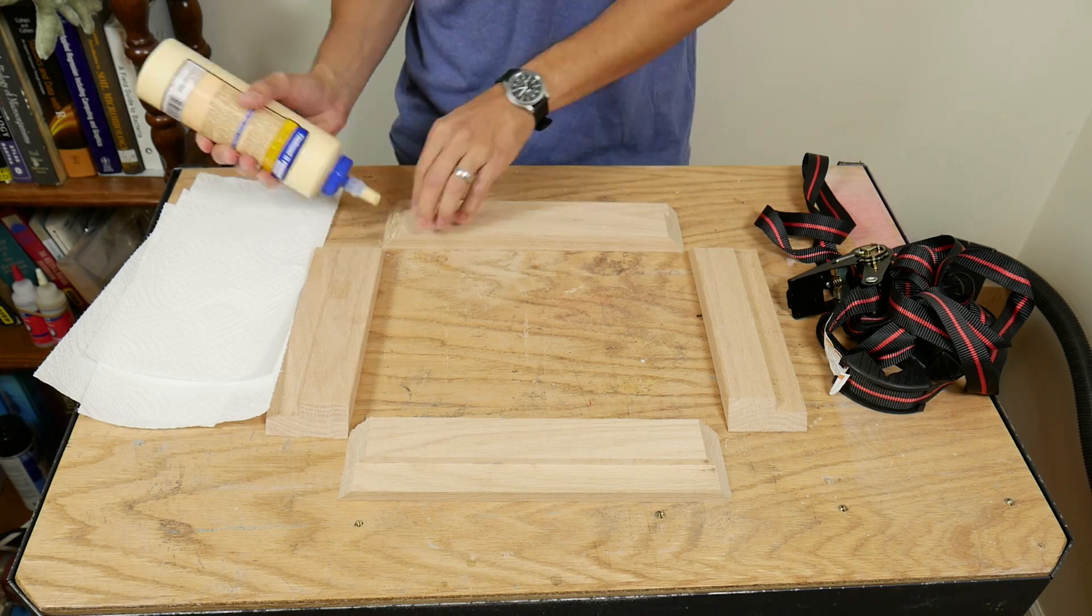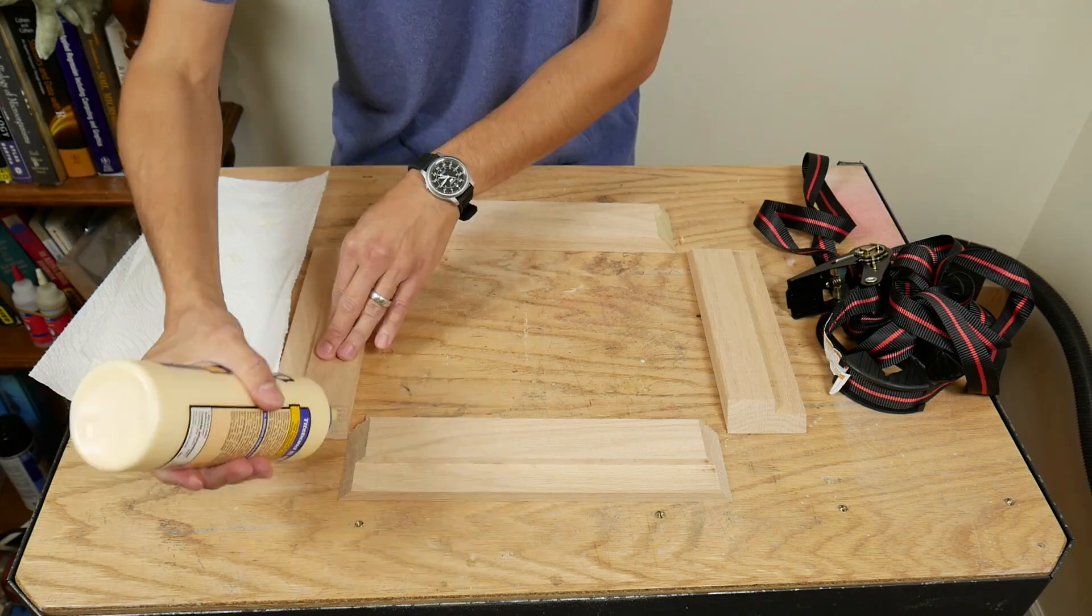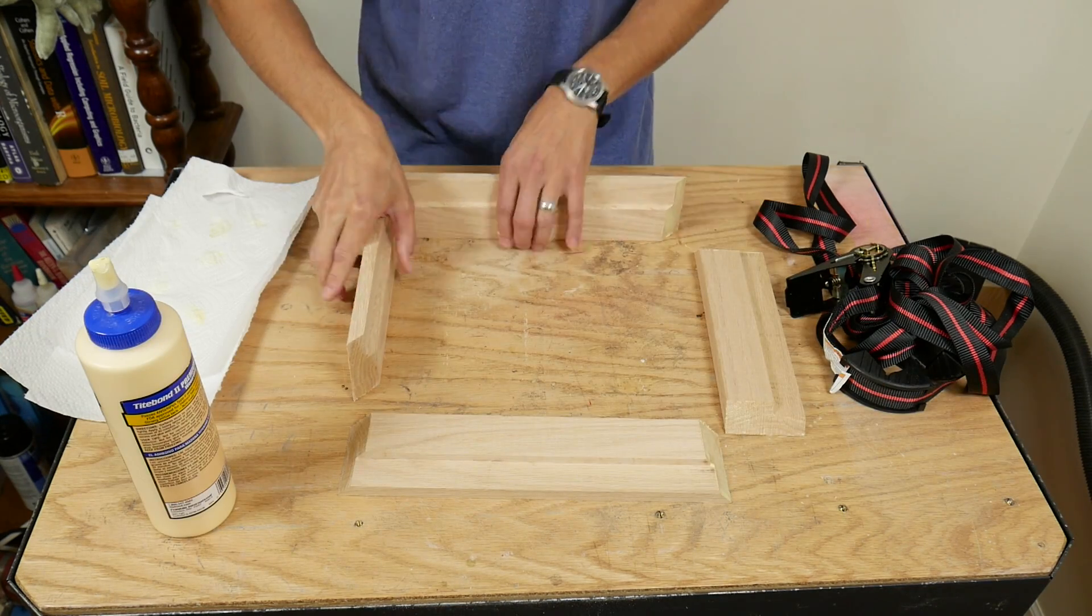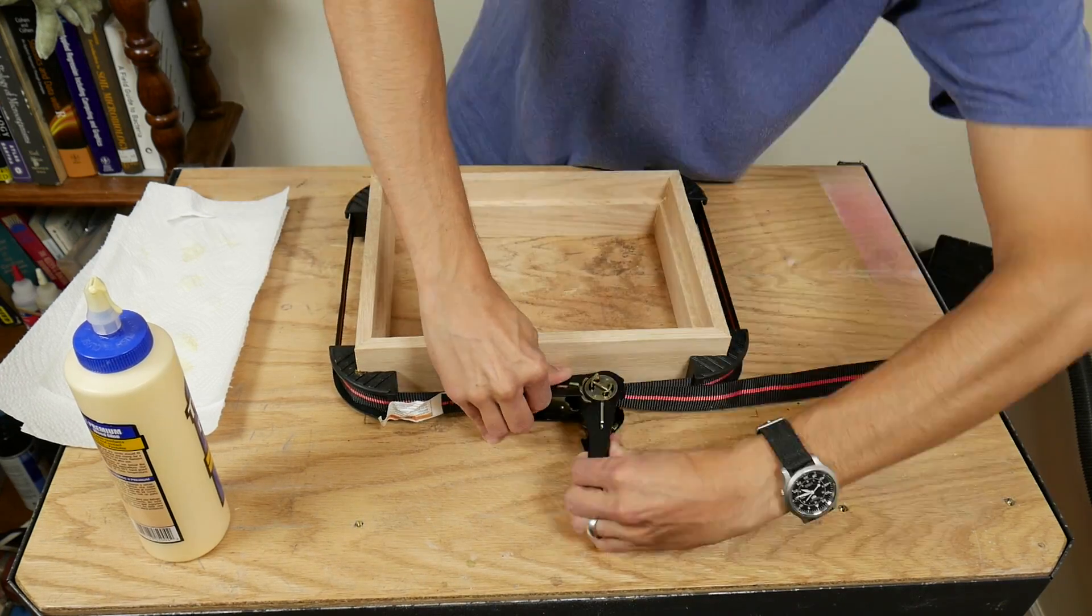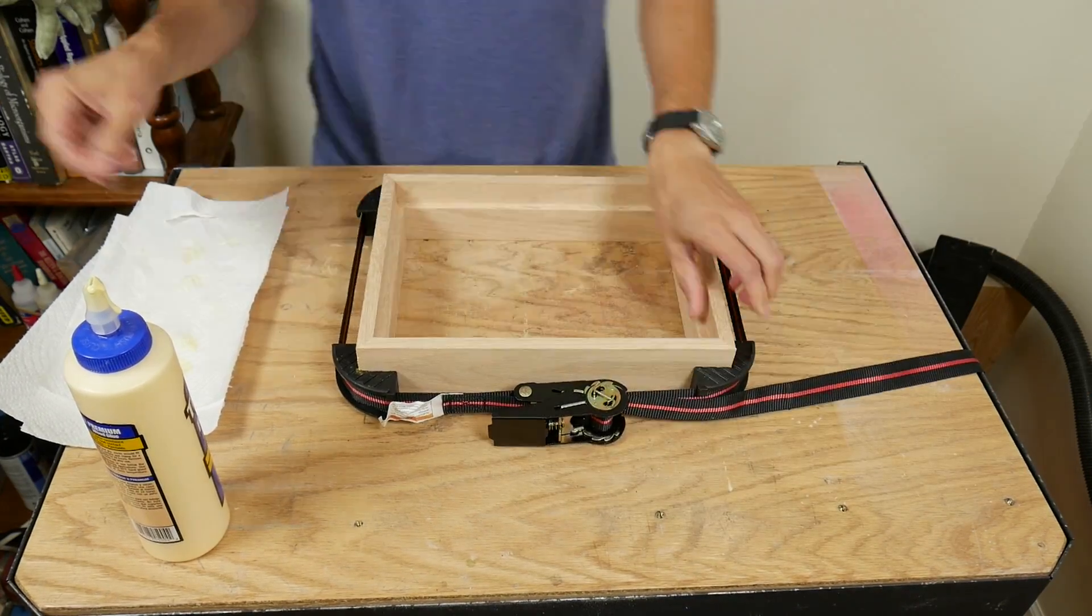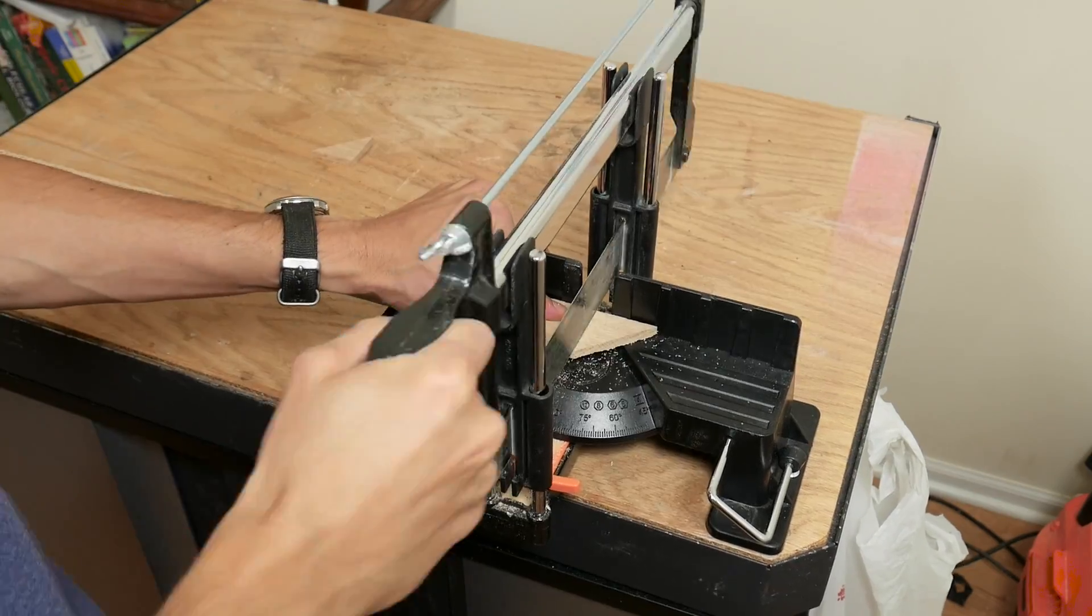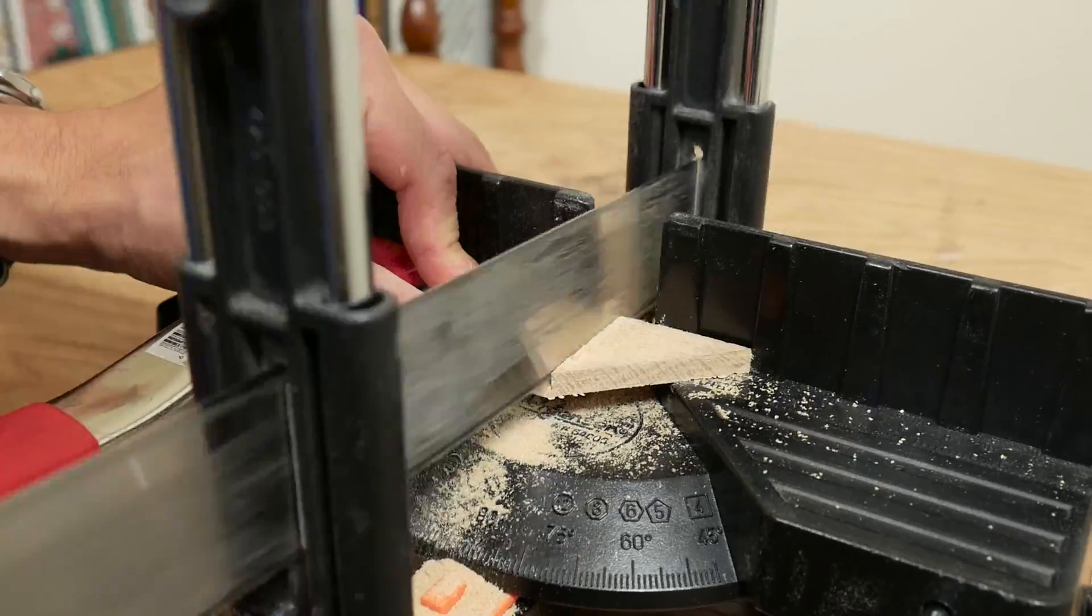Then I glued the frame together, clamped it and let it dry. I cut eight triangles out of some scrap quarter inch oak to serve as splines in the frame.